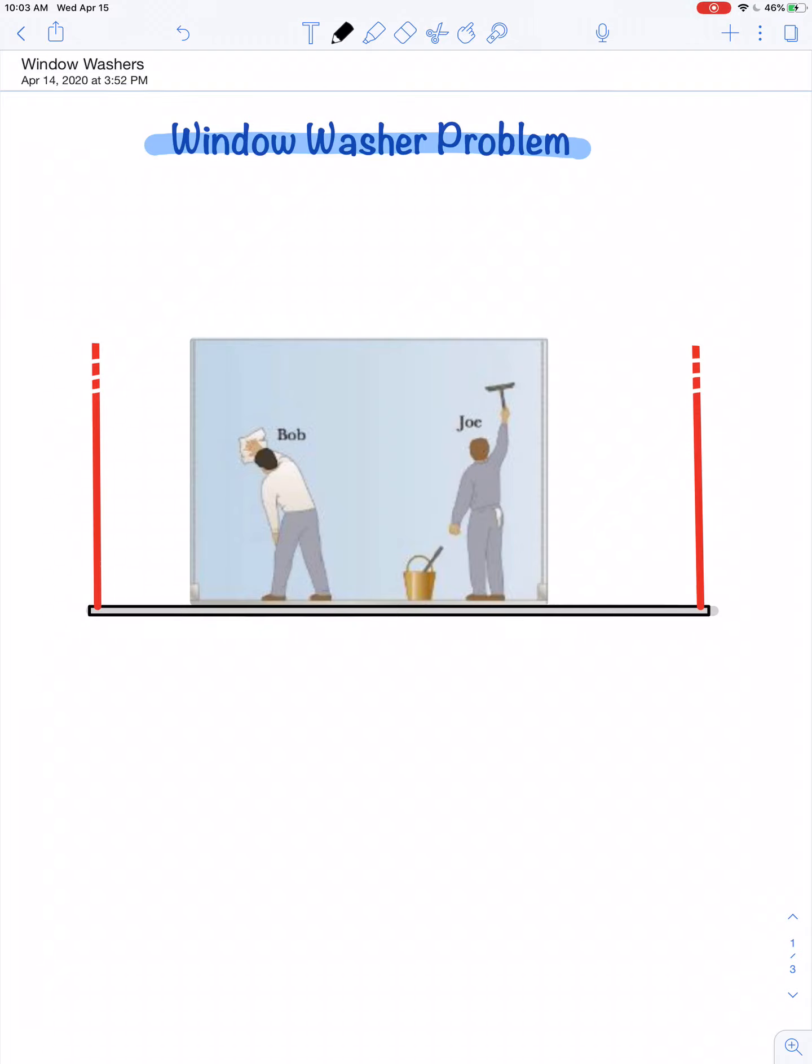Welcome to the window washer problem. We're going to apply both conditions for equilibrium: net torque equals zero and net force equals zero.